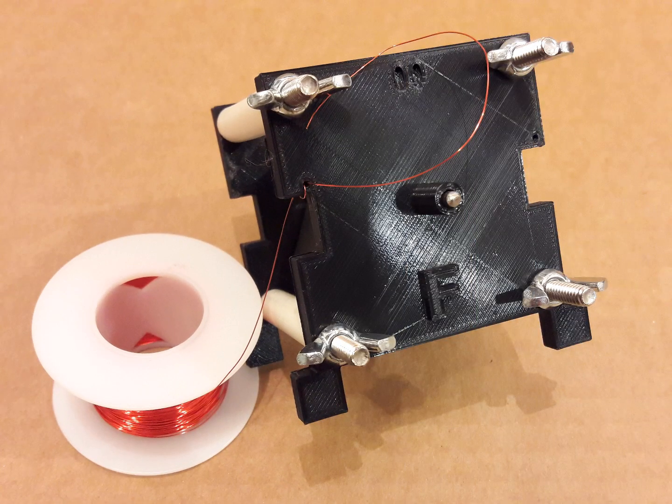Insert a pencil through the spool of magnet wire and situate the ends of the pencil between two heavy books so that the spool can spin freely.